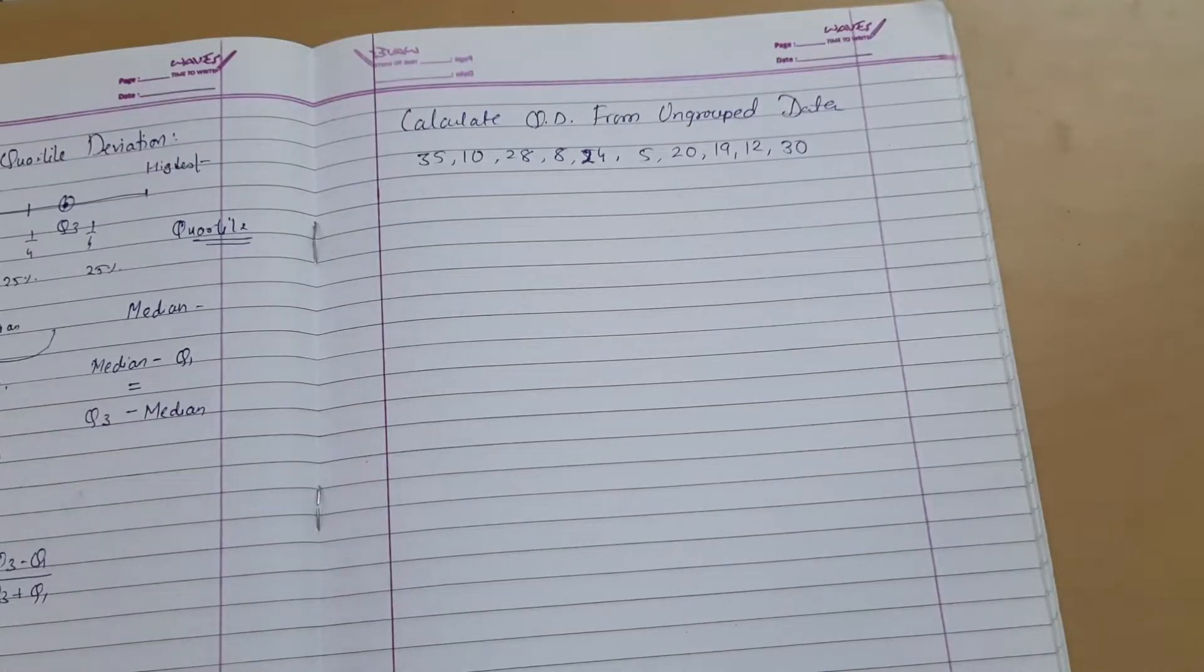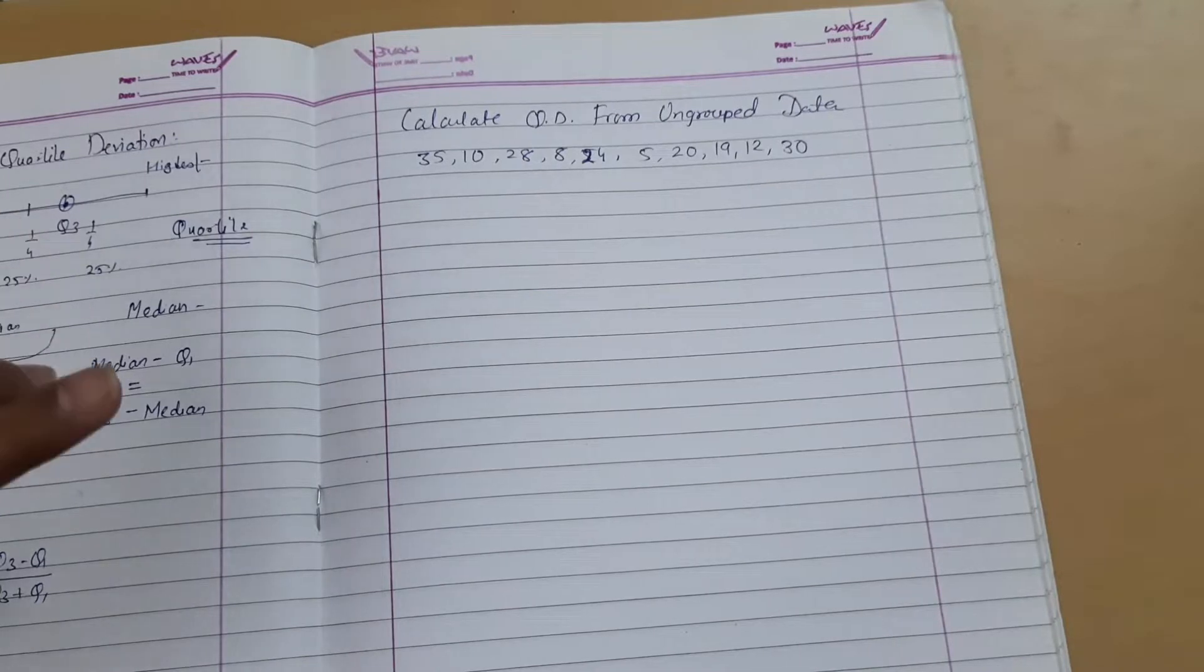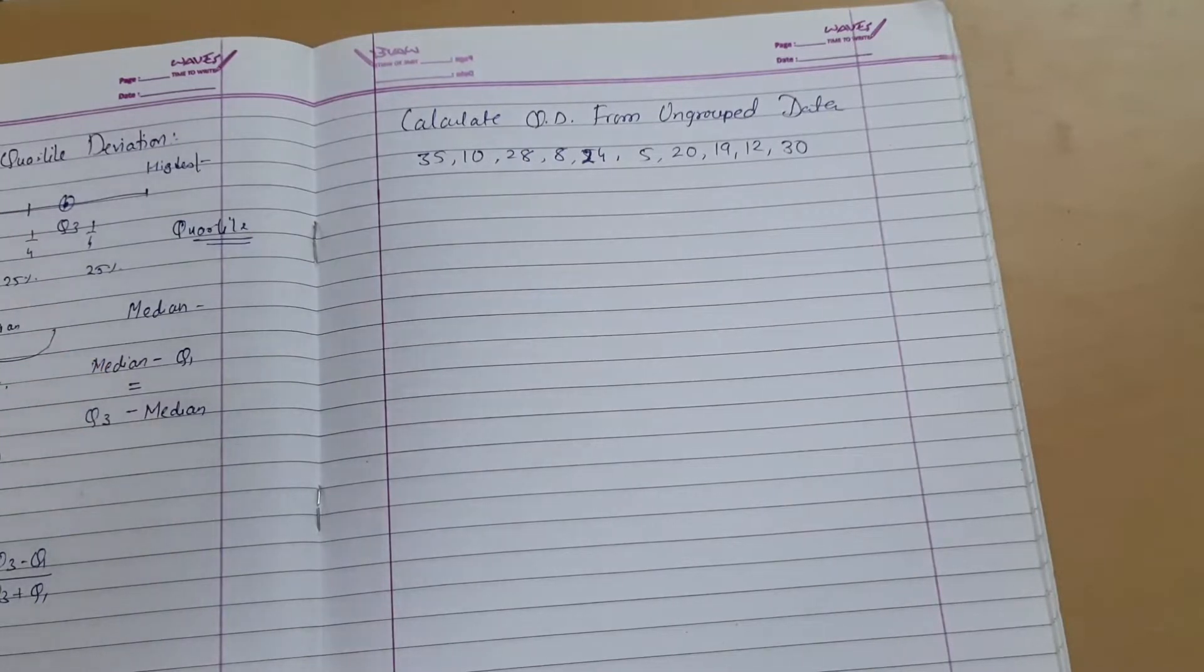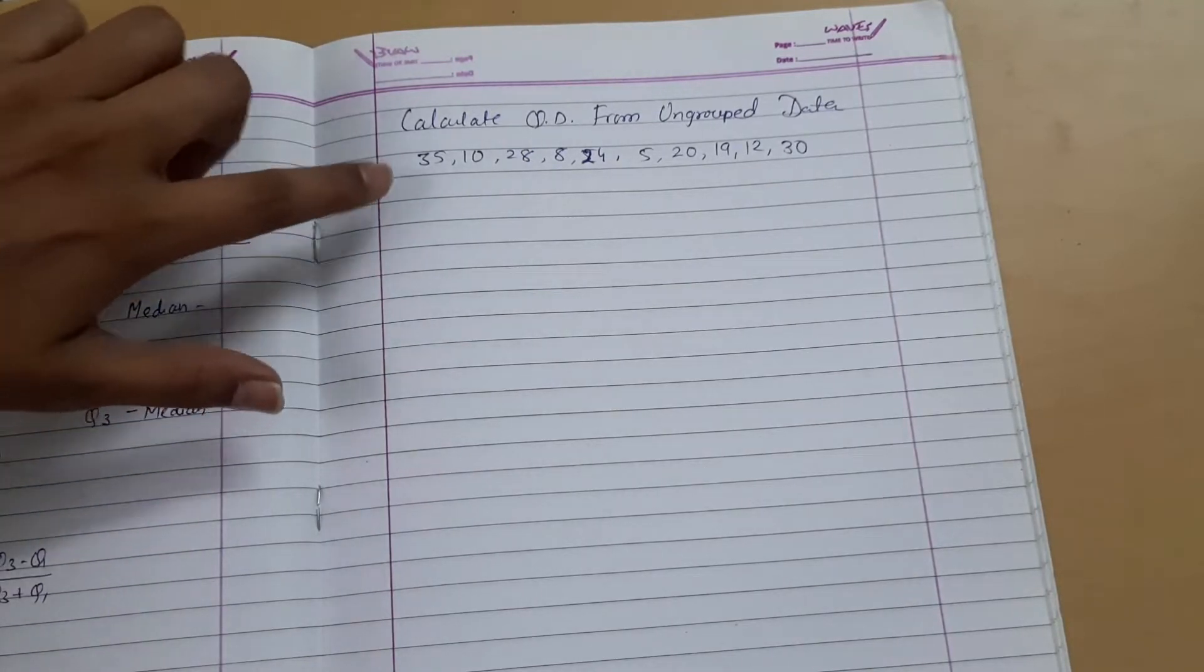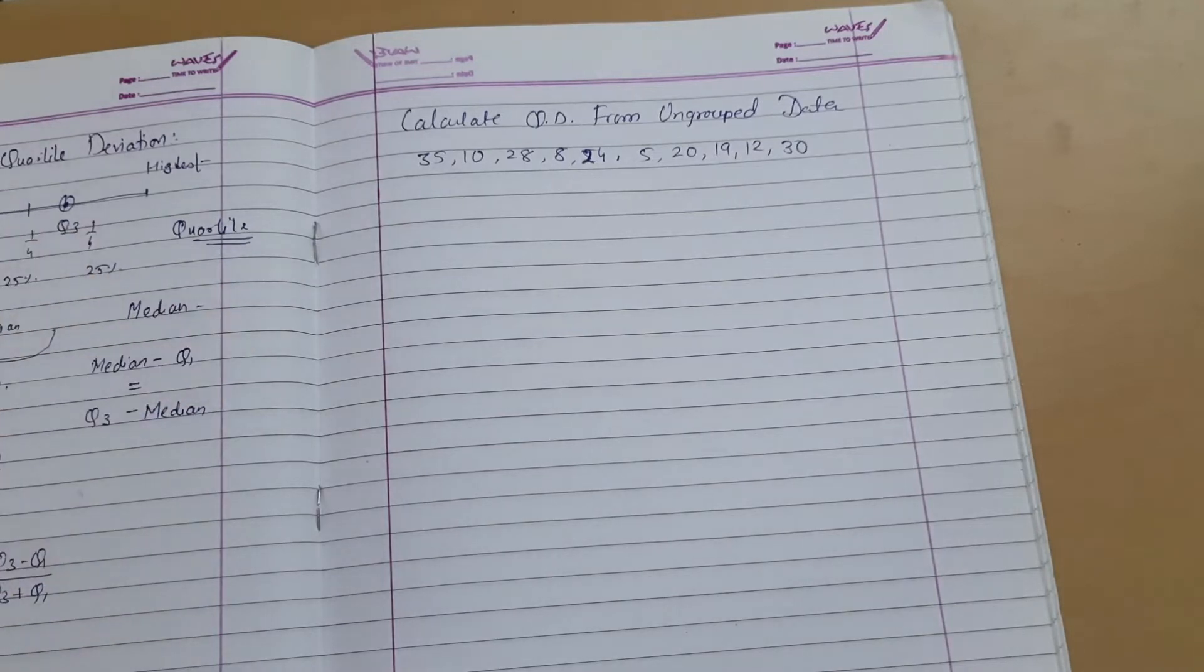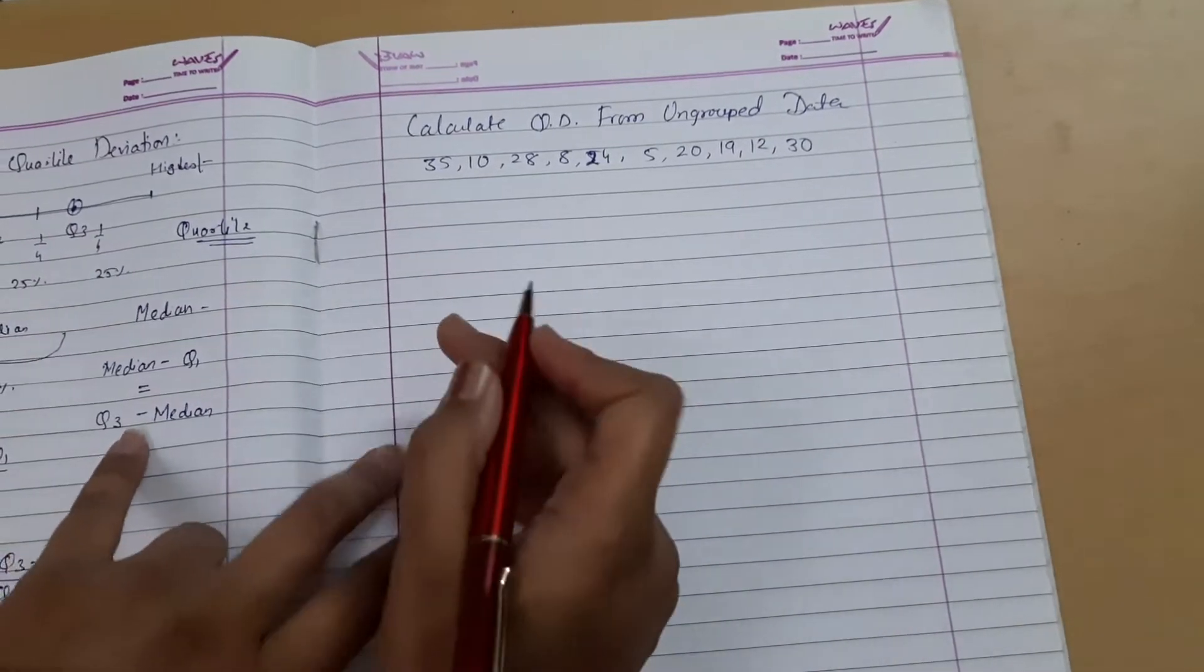Welcome back. Let us start the example of quartile deviation. The data on grouped data, just observations are there. The condition: median, interquartile range, quartile deviation. We have to arrange the data in ascending or descending form. So let's do this process in ascending form.